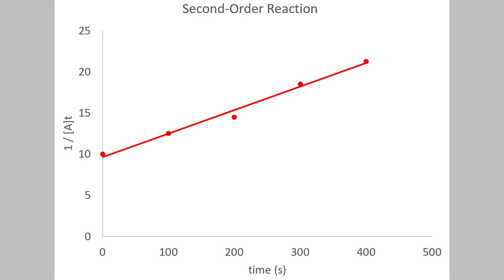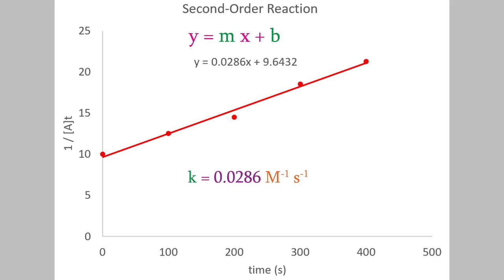If you use Excel to make the graph, it can tell you the equation of the line. Here's that equation — you can see it has the usual format for a straight line: y, m, x, and b. So the slope is 0.0286. Since our times were all in seconds, that means the units for k are molars to the minus 1 times seconds to the minus 1. So now we know the rate constant. This is a very common way of figuring out the rate constant for a new reaction when we discover one in our research.